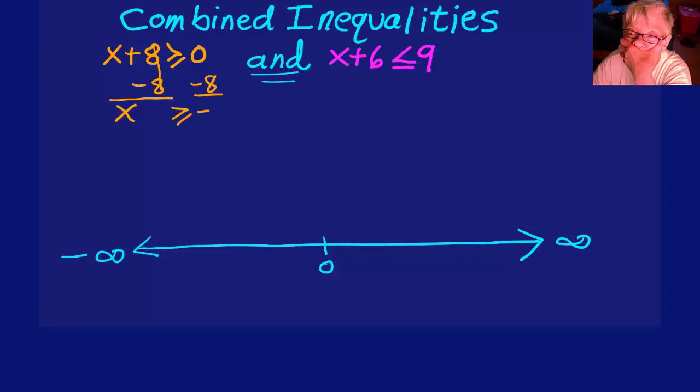And you're going to end up with x is greater than or equal to negative 8. Now we're going to graph this. Come on out to negative 8 on the number line, put a bracket through negative 8, and then an arrow going off to the right forever, because that's precisely what the solution says. x can be any number to the right of or greater than negative 8.